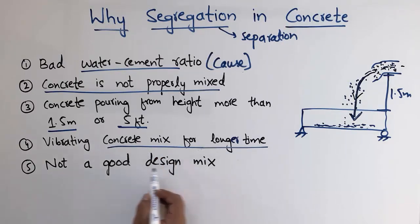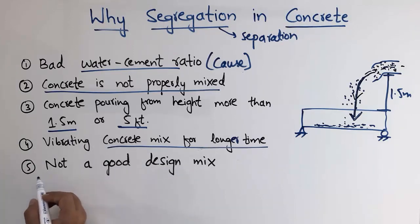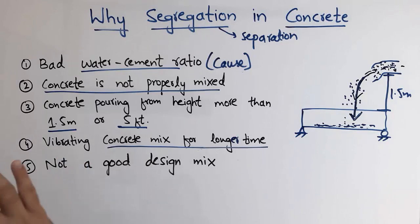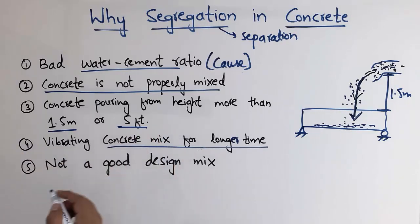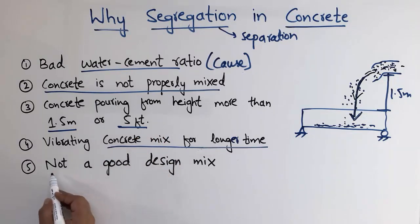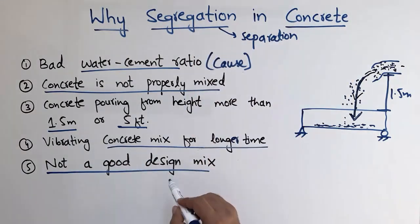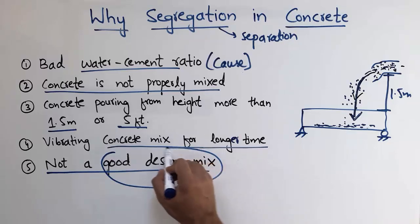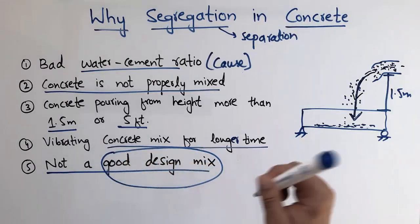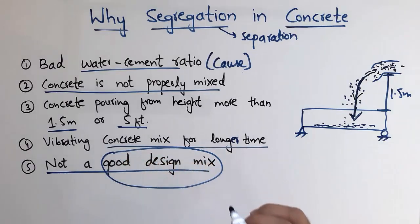Another factor is a poor design mix. We should always design the mix with a good water-cement ratio, a good percentage of fine aggregate and coarse aggregate, and sometimes using admixtures to achieve good workability and strength. If the design mix is not good, we will have segregation in the concrete. It is very important to have a good design mix to avoid segregation.